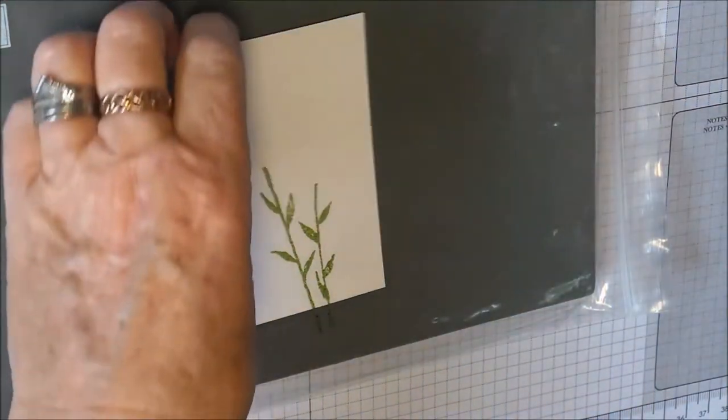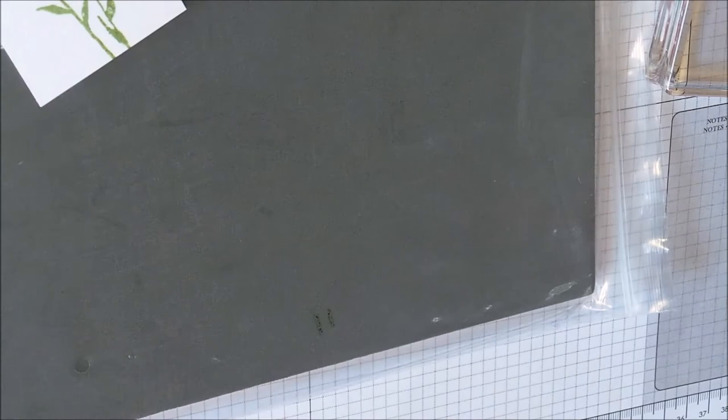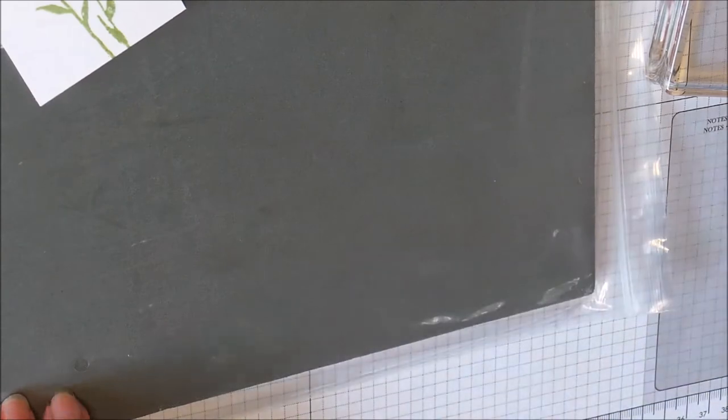So that's the stem stamped on there. See how I've got a little bit of ink on my stamp and pierce mat? But because I've left the plastic on, I can easily wipe that off with a wet wipe.